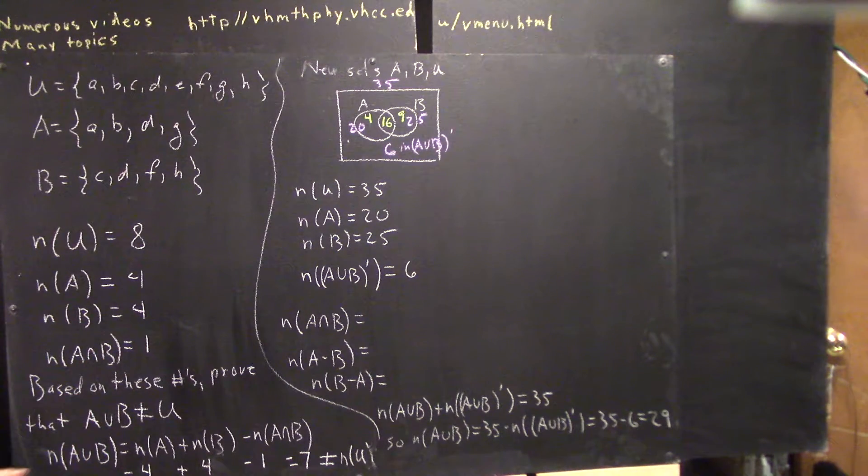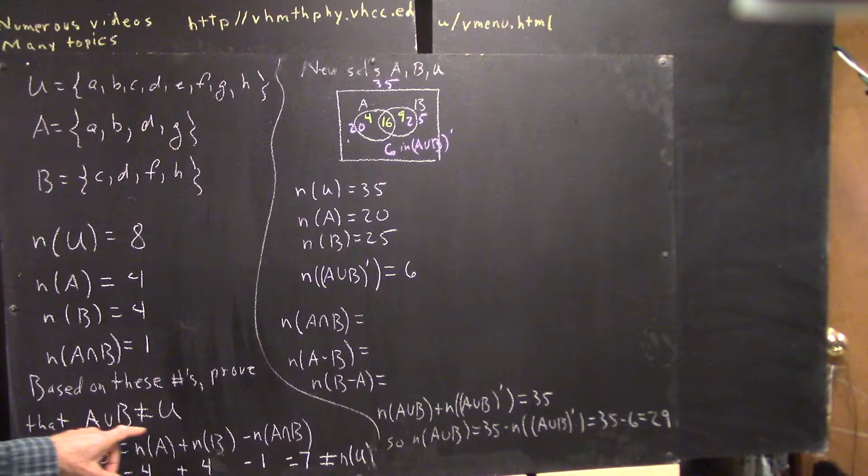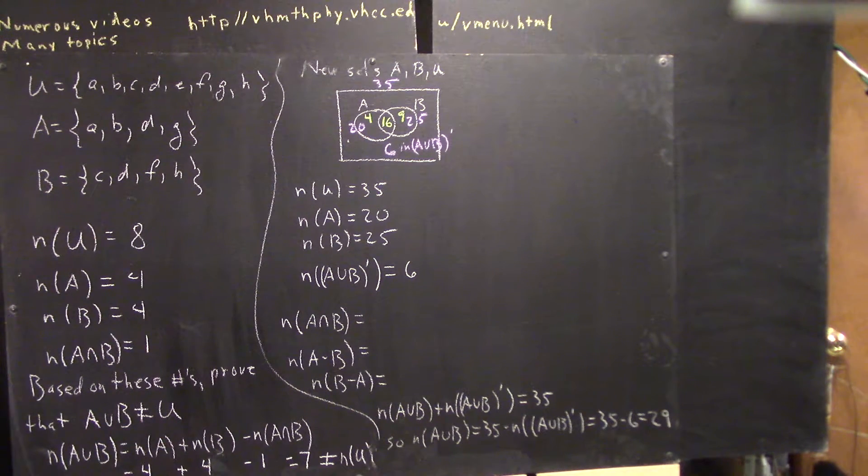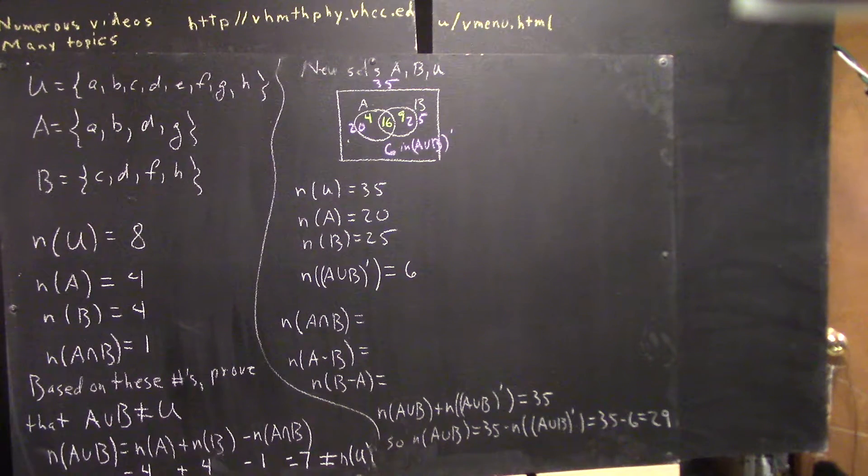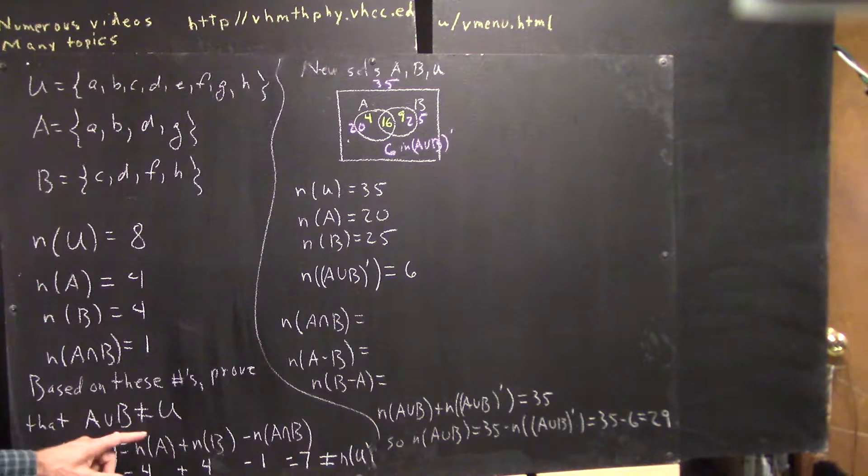Now, based on these numbers, can we prove that A union B can't equal the universal set? If we systematically generate A union B, we've already seen what that is, and we can see that it's not equal to the universal set. But not using that fact, just using these numbers, can we prove it?